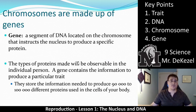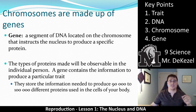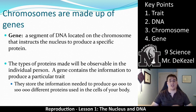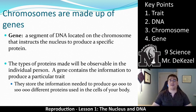Chromosomes have segments on them called genes. A gene is a small segment of DNA located on a chromosome that instructs the nucleus to produce a specific protein. The types of proteins made will be observable in the individual. A gene contains the information to produce a particular trait — you can have a gene that controls hair color, eye color, height, whether you have a hitchhiker's thumb, or whether your earlobes are connected.